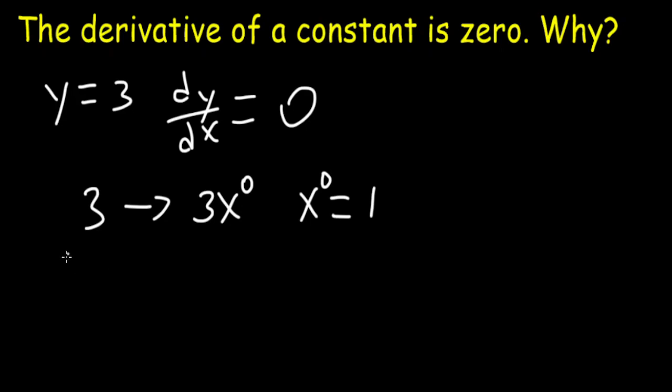So if you have d/dx of 3, this is equivalent to d/dx of 3 times x to the 0. These are equivalent.